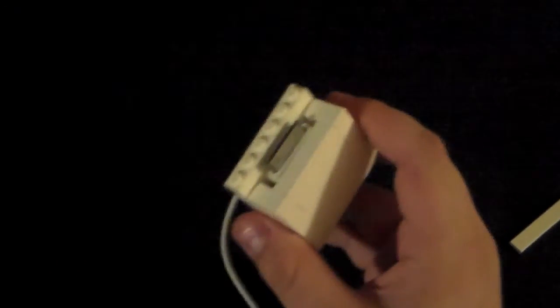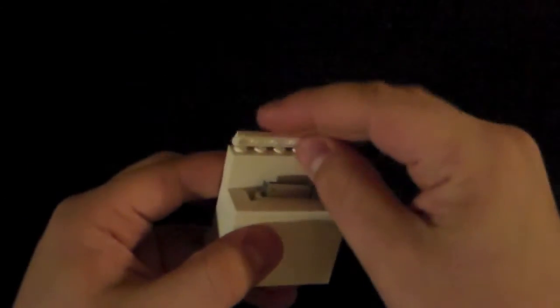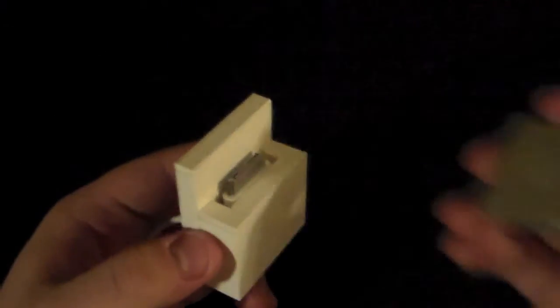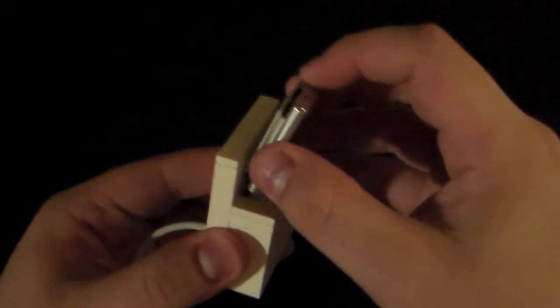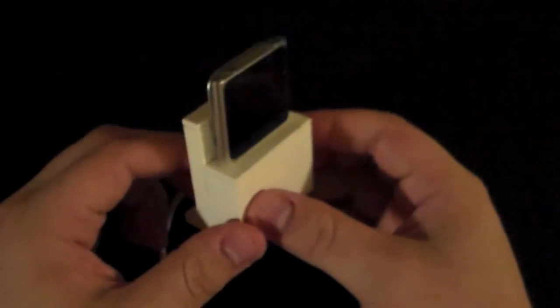So take a 1x6 brick, another 1x6 brick, and just build up the back there. Put the 1x6 tile back, and there you have your iPod Nano LEGO Dock.